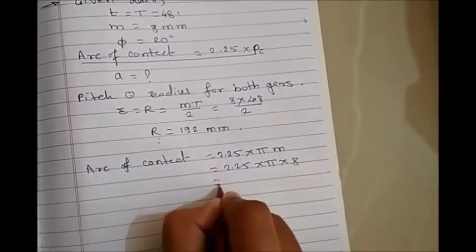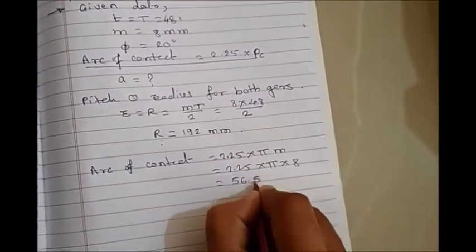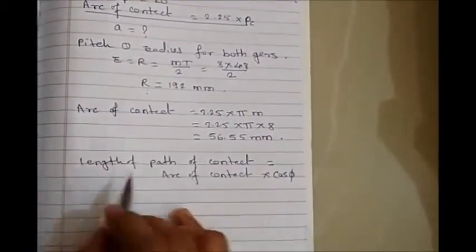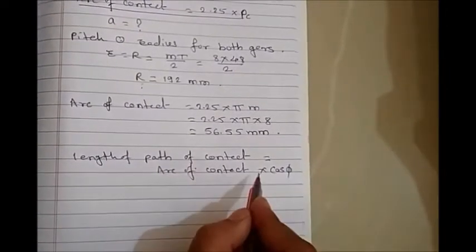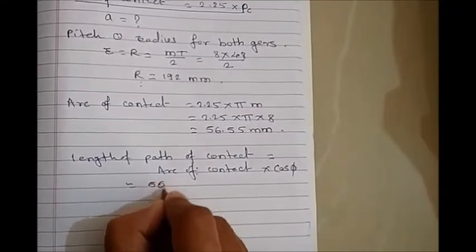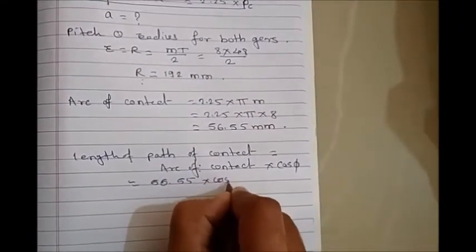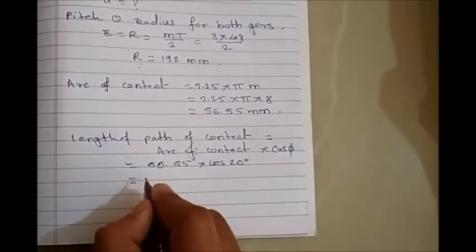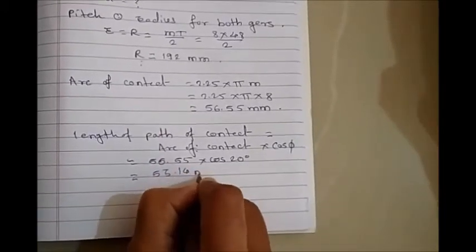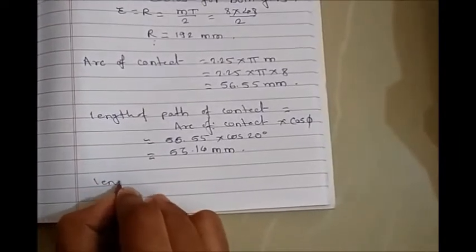We can calculate arc of contact: it equals 2.25 Pc equals 2.25 times πm, so 2.25 times π times 8, which becomes 56.55 mm. Now we know that length of path of contact equals arc of contact times cos φ, so 56.55 times cos 20 degrees equals 53.14 mm.